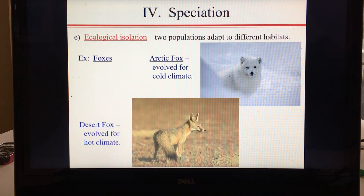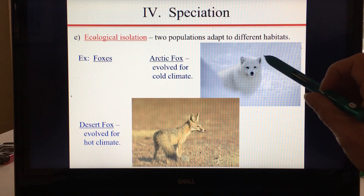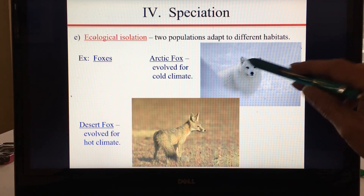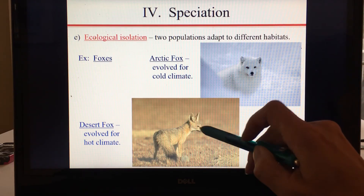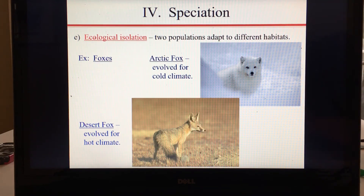Another type of isolation is ecological isolation, when two populations adapt to different habitats. For example, the arctic fox has evolved for a cold climate and the desert fox has evolved for a hot climate. The arctic fox has tiny ears and thick fur — the tiny ears prevent heat loss — while the desert fox has huge ears to help it lose heat in the hot climate.